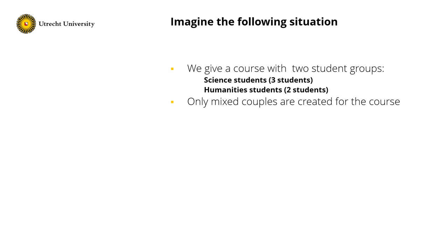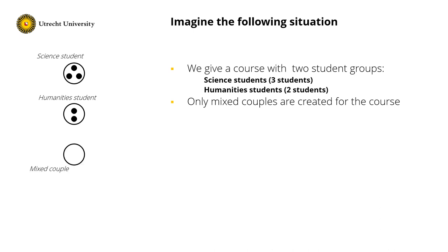First let's transform this into a Petri net. As the first step, I create a place for science students — the condition is 'science student' — and I have three students, so three tokens. Next I create a place for the humanities students with two tokens. Last, I create a place for the mixed couples, and as initially there are no couples, the place remains empty.